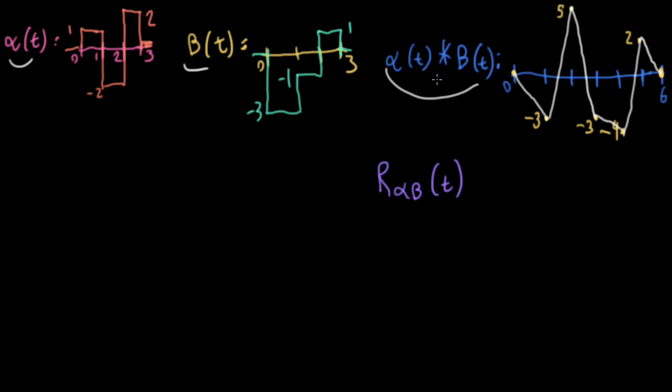Now, convolution is commutative, so convolving alpha with beta is the same as convolving beta with alpha. But for cross-correlation, the order does indeed matter. So we just need to be careful with that.